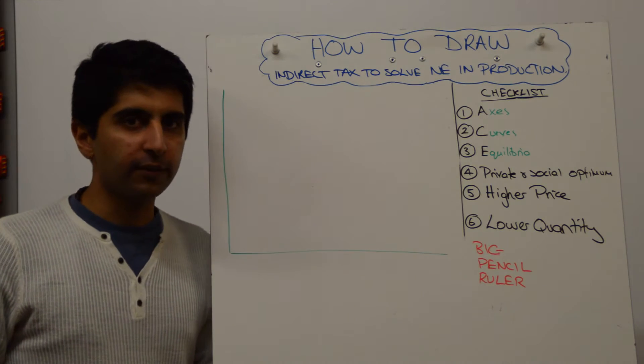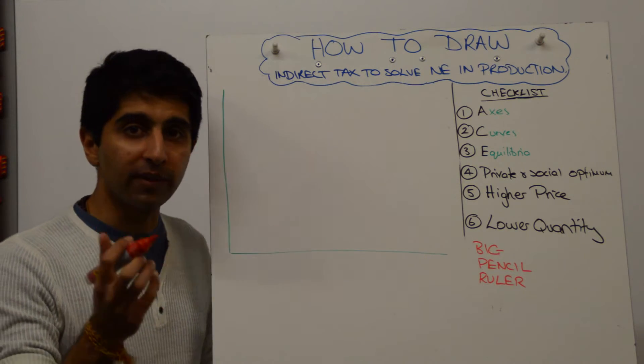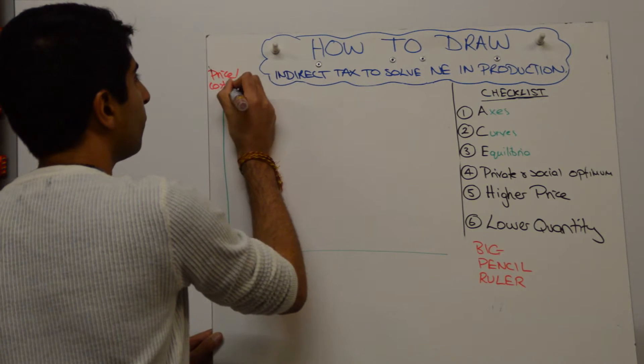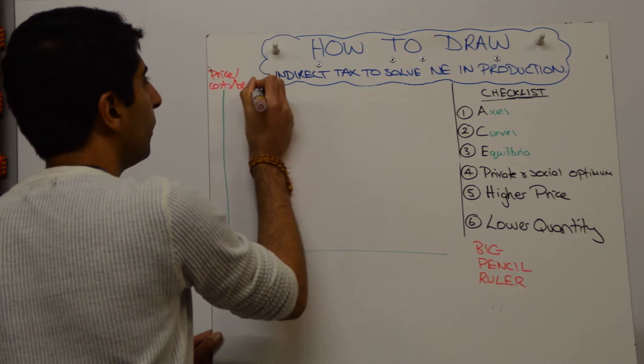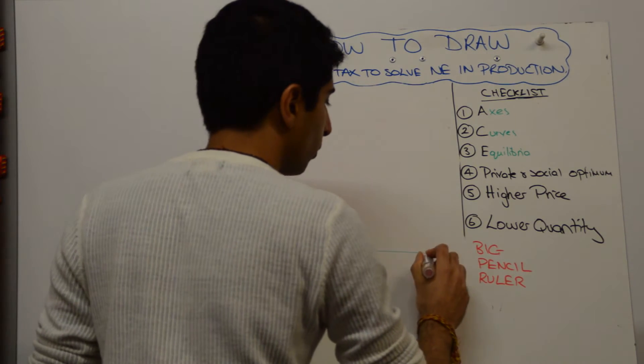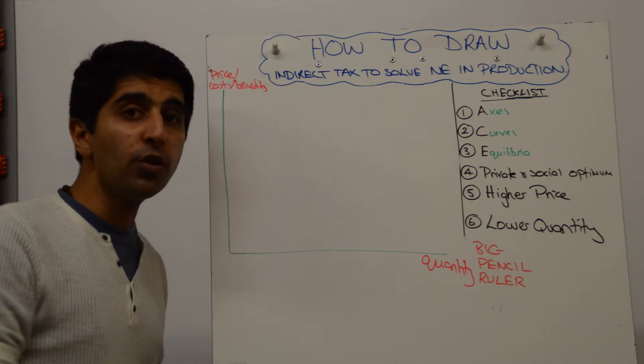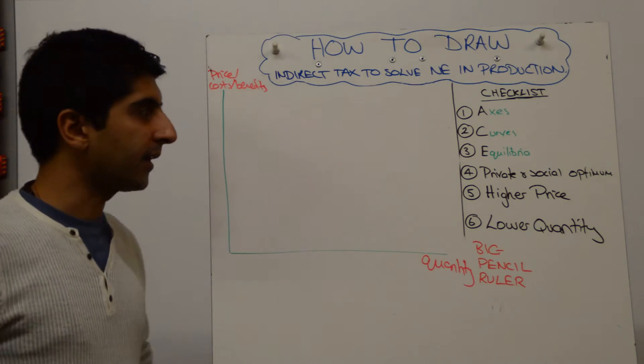How do you draw this diagram? Well, we start with labelling the axes. It's a market failure based diagram, so it's price, costs and benefits, as always, on the y-axis, and just quantity is fine on the x-axis. Once again, if you know the market that you're working with, apply on the axis.